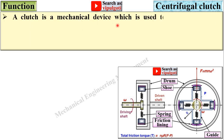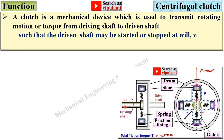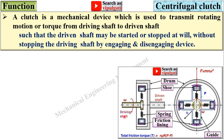A clutch is a mechanical device which is used to transmit rotating motion or torque from the driving shaft to the driven shaft. The condition is such that the driven shaft may be started or stopped at will without stopping the driving shaft, by engaging and disengaging the device.